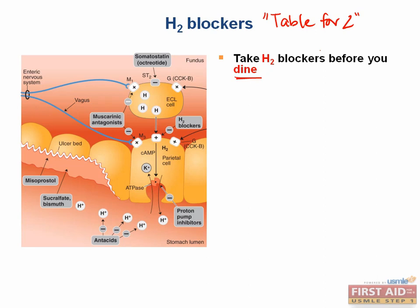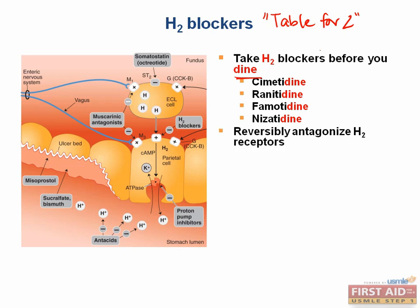We have four drugs to mention: cimetidine, ranitidine, famotidine, and nizatidine. These all work by reversibly antagonizing H2 receptors, which results in decreased acid secretion from parietal cells, which you can see here working in the diagram. This also reduces the effects of other substances that induce acid secretion from parietal cells, such as gastrin and acetylcholine.